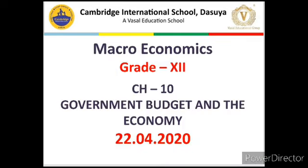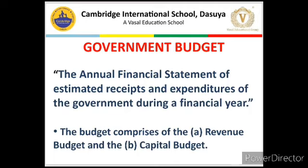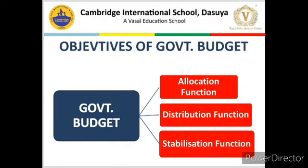Before moving on to a new topic, I would like to remind you that in yesterday's class we studied about government budget and its objectives. Government budget is an annual financial statement showing estimated receipts and expenditures of a government during a financial year. It is of two types: revenue budget, which we are going to study today, and capital budget. The objectives of government budget can be categorized into three categories: allocation function, distribution function, and stabilization function.